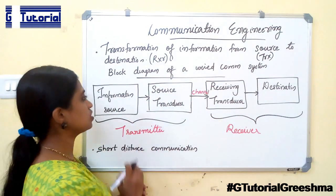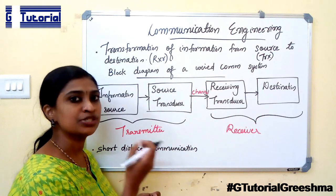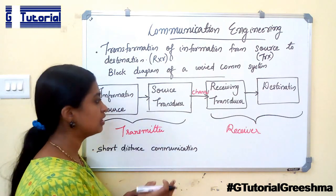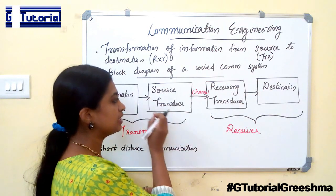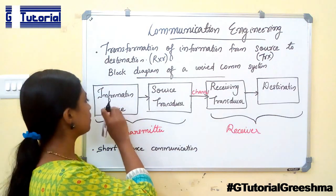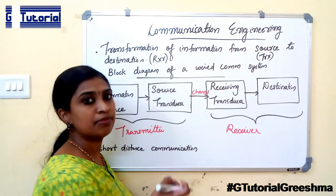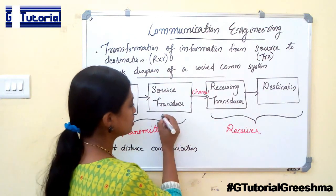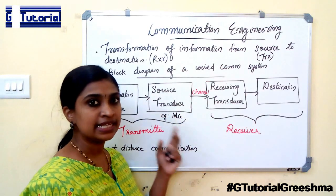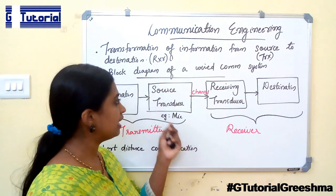The information source is the source that produces the required time-varying signal that has to be transmitted — it is the source of information to be transmitted. The source transducer converts any physical signal produced by the information source to an electrical signal. For example, a mic is an example of a source transducer. The purpose of a mic is to convert the sound signal to an electrical signal, and it is then transmitted.